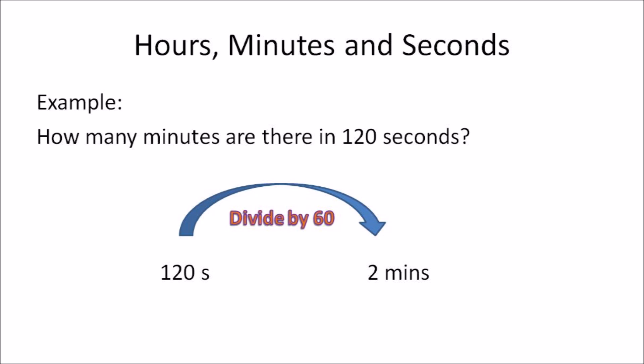In this example: how many minutes are there in 120 seconds? That means you are converting seconds to minutes. In order to convert seconds to minutes, you need to divide the amount in seconds by 60. So 120 seconds divided by 60 gives you two minutes.